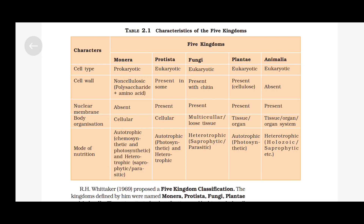Kingdom Plantae: cell type is eukaryotic, cell wall is present of cellulose, nuclear membrane is present, body organization includes tissue or organ, and mode of nutrition is autotrophic, that is photosynthetic. Kingdom Animalia: cell type is eukaryotic, cell wall is absent, nuclear membrane is present, body organization is tissue, organ or organ system, and mode of nutrition is heterotrophic — that is holozoic, saprophytic, etc.